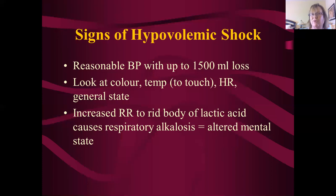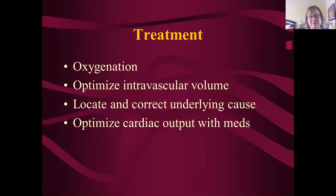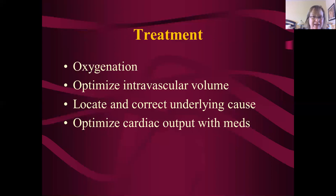That lactic acidosis and respiratory alkalosis process needs to be responded to, and that's why in shock we're always paying attention to oxygenation. Treatment number one: oxygenation. We want to optimize ventilation and oxygenation. We do not want to use positive pressure ventilation because that decreases cardiac output. In hypovolemic shock, high-flow oxygen is needed — an O2 sat of 92 or 93 is inadequate. We want to hyper-oxygenate as much as possible.